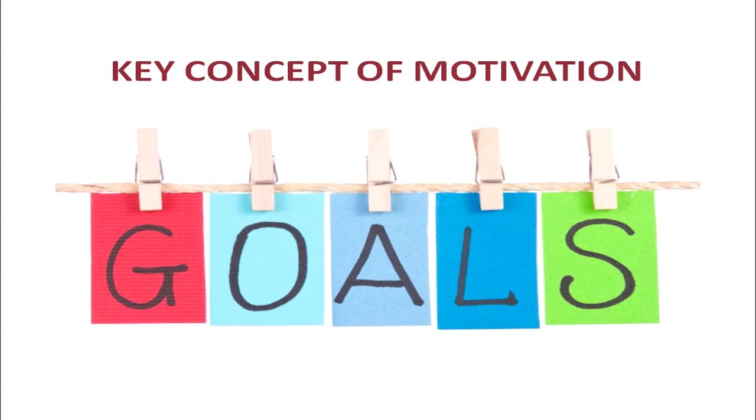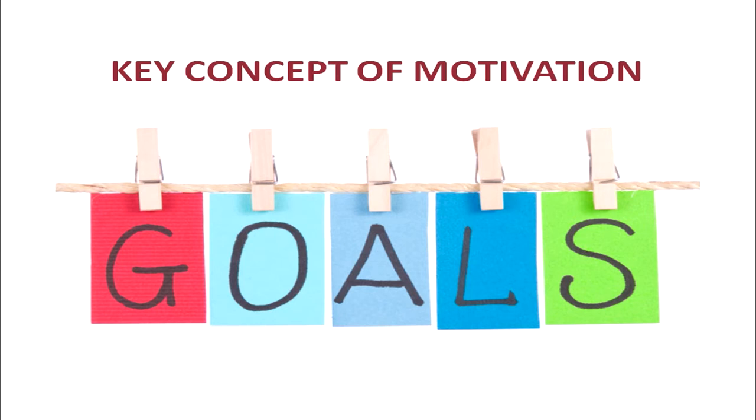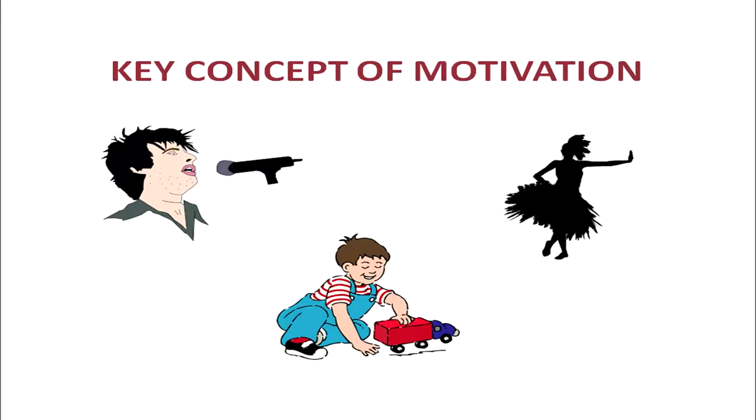Every individual has their own goals for which they are motivated to achieve in their life. Thinking about the goal motivates a person to organize his or her actions. If hunger is a need, eating food is a goal — thus, goal is related to the needy state. However, in certain cases behavior is also guided by intrinsic goals, meaning behavior does not always need external goals; it may be satisfying and enjoyable in itself. Some people may like to sing, dance or play just for the sake of it. Thus, goals can be intrinsic or extrinsic. You can see how every individual is engaged in different motivated activities.